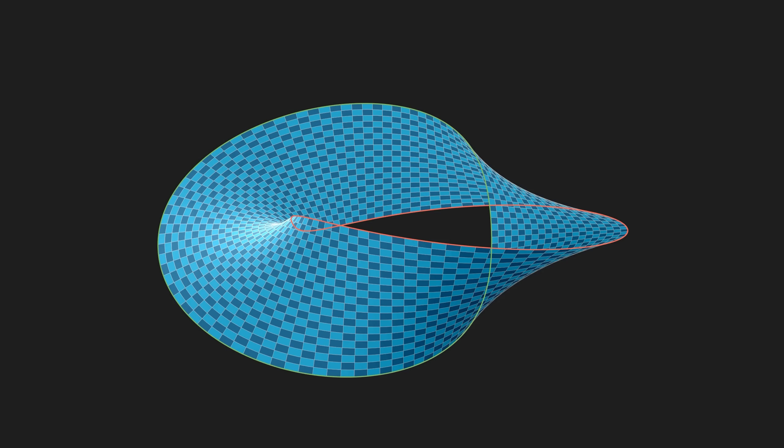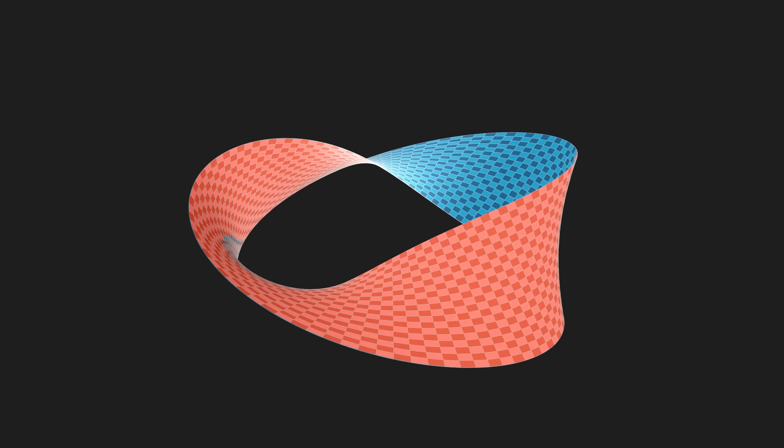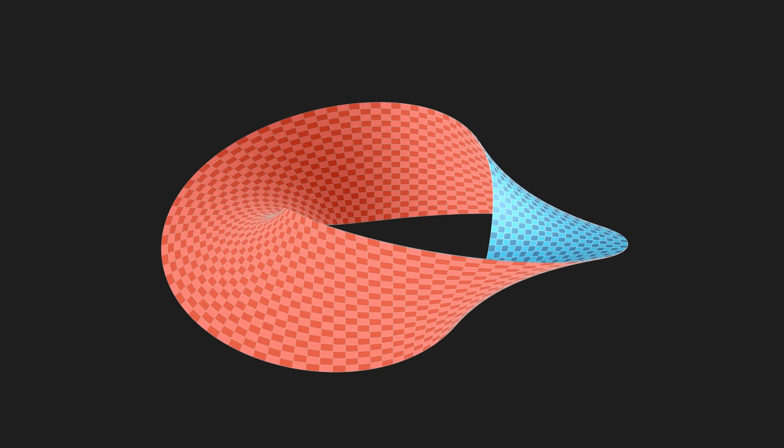It has two boundaries like a regular cylinder, and it has two distinct sides like a regular cylinder. So there are two distinct interval bundles over a circle.